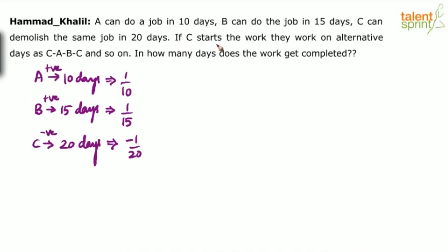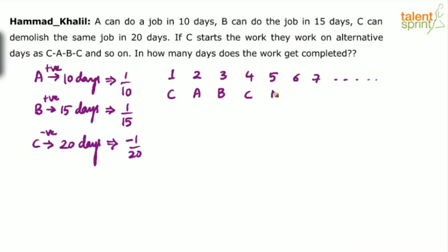C starts the work and they work on alternate days as C, A, B, C and so on. So on the first day C works, then A, then B, then C, then A, B, C and so on. Every three days the amount of work done repeats itself — each cycle is three days where C, A, and B work in that order: C, A, B, again C, A, B, and so on.